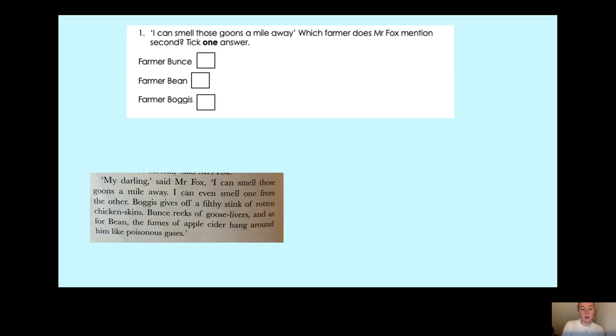So who is it? Let's have a look. Bunce reeks of goose livers. There we go. So therefore, farmer Bunce is mentioned second because Boggis is mentioned first, Bunce is mentioned second and Bean is mentioned third. So therefore, you'd put a tick in farmer Bunce's box.